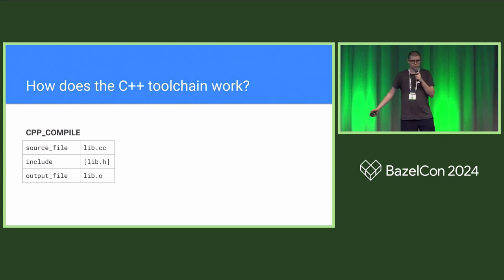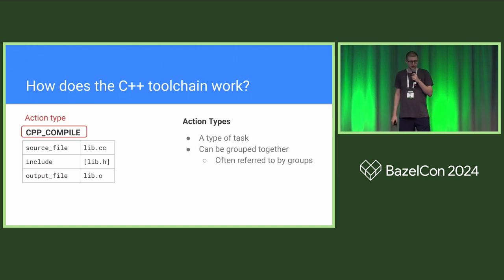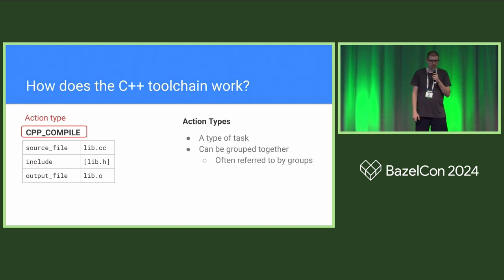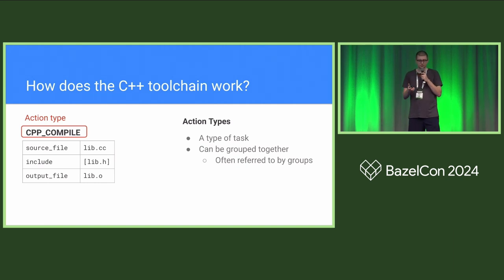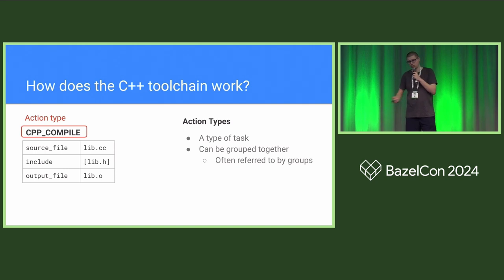This is the inputs to our action — the action template. It consists of two things. First is the action type: it might be CCompile, might be CppCompile, might be link a static executable. It's what you want to do in this action. They're often grouped together — for example, it's not necessarily often that you want to do something only on a CCompile action; you would probably want to say you want to do it in all compile actions. So they're very often grouped together and referred to by groups.